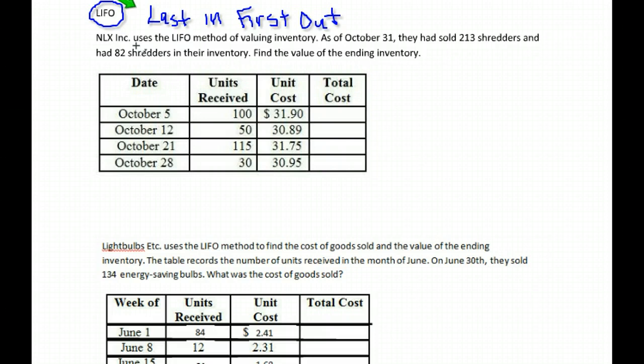So this one's Last In, First Out, which means they start selling these last items and then work their way back to the first ones that they ordered. So this goes the opposite order. This example says, this business uses the LIFO method for inventory. As of October 31st, they sold 213 shredders and had 82 left over in their inventory. Find the value of the end inventory.